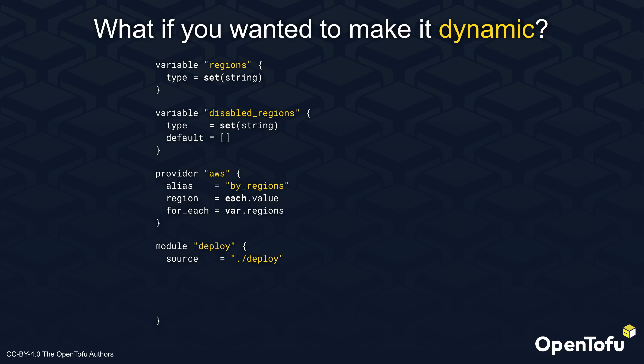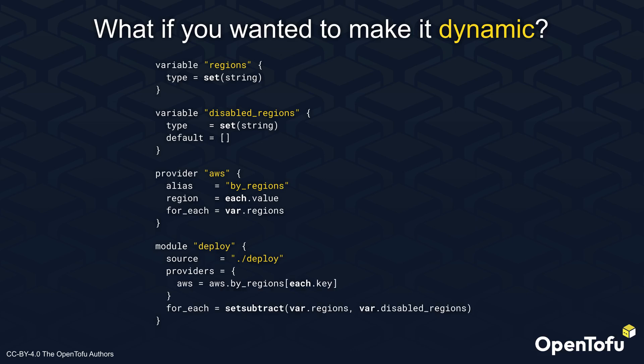Finally, we will create our module call block as usual. However, we will use a ForEach parameter and explicitly pass in a Provider instance. Notice that the ForEach parameter makes use of the DisabledRegions variable. If we want to remove a region, we first have to add it to the DisabledRegions, run Apply, and then remove the region entirely. This is the case because the Provider block still needs to exist for removal.